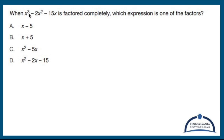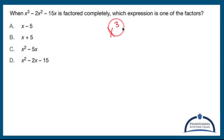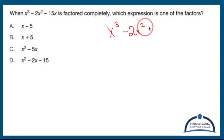When x cubed minus 2x squared minus 15x is factored completely, which expression is one of the factors? Let's factor that completely before even looking at the options. I have x cubed minus 2x squared minus 15x.